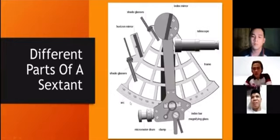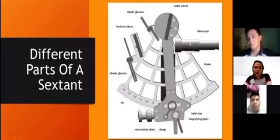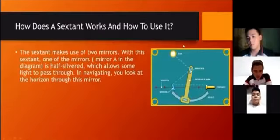The arc is the one you will adjust for the degree of the angle depending on the desired use. Next is the micrometer drum and clamp, index bar, magnifying glass. Next is the frame, so the sextant has a frame. And lastly, it has a telescope which is like a viewfinder. Those are the different parts of the sextant.